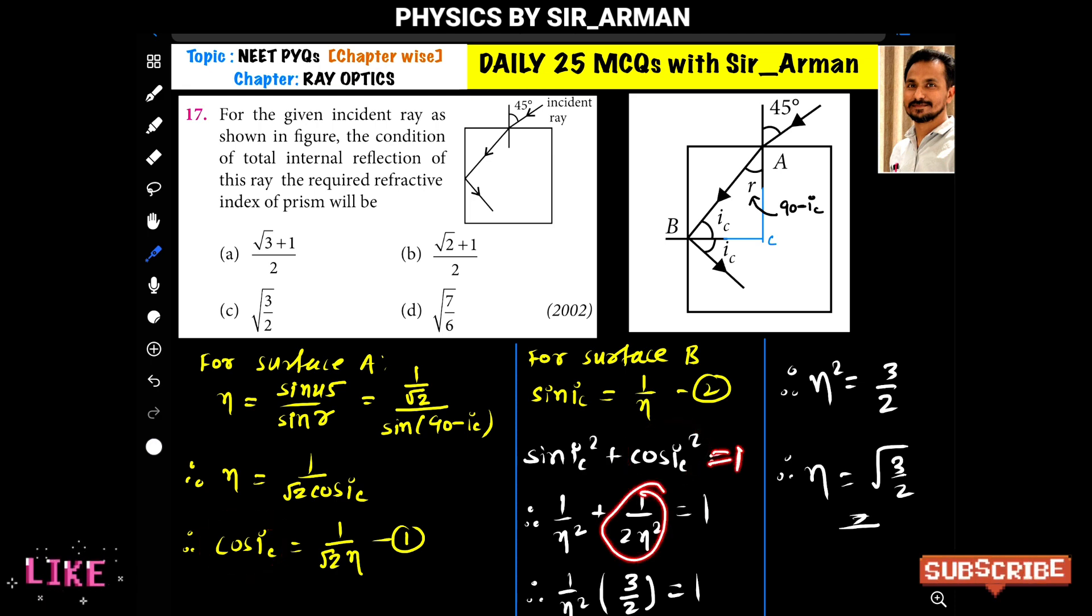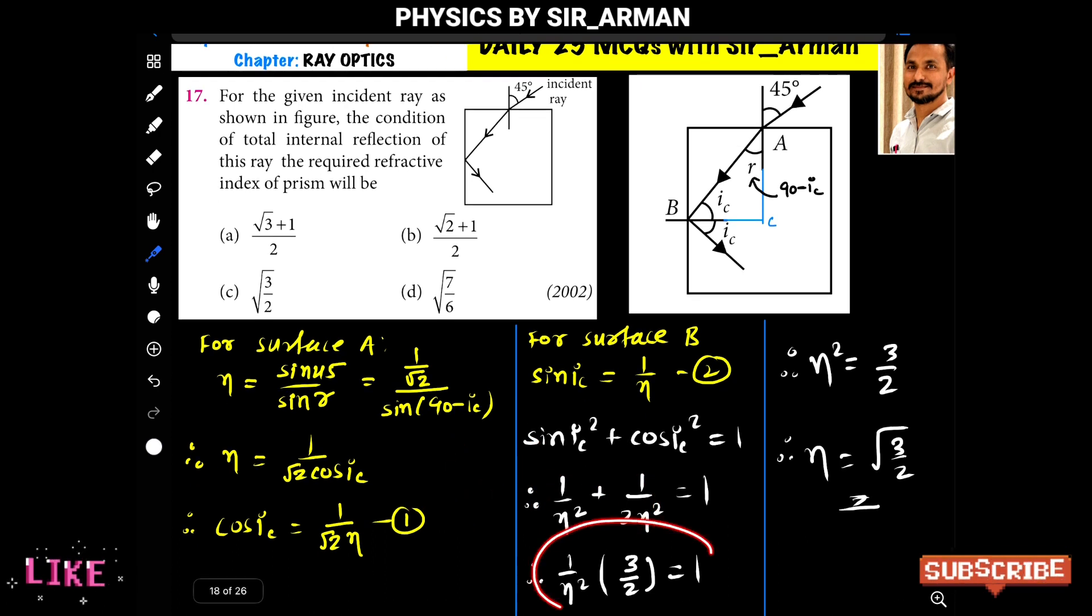Now we are taking 1 by n square common in both the terms, so it will become 1 by n square. If we take common, here 1 is remaining plus here 1 by 2 is remaining. So 1 plus 1 by 2 is 3 by 2. So 1 by n square times 3 by 2 equals 1.